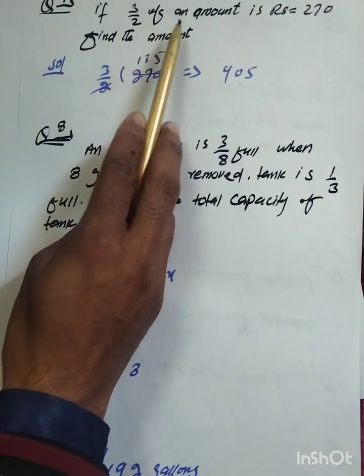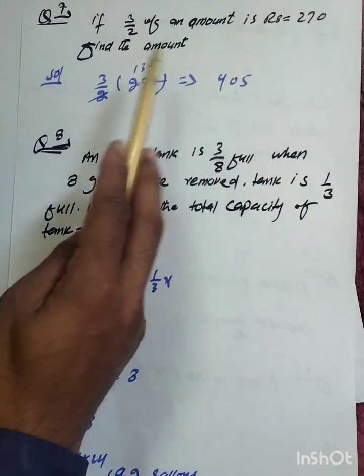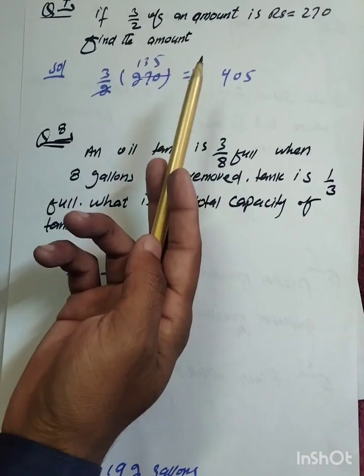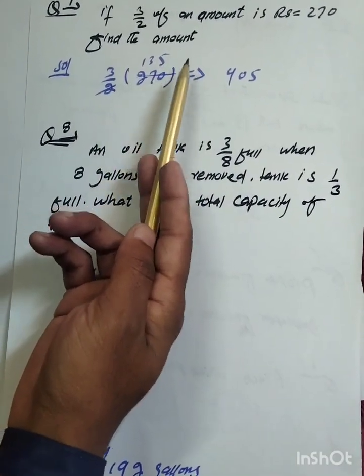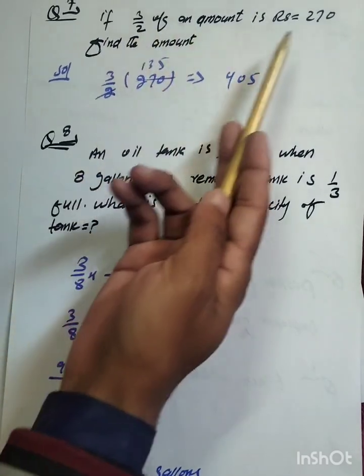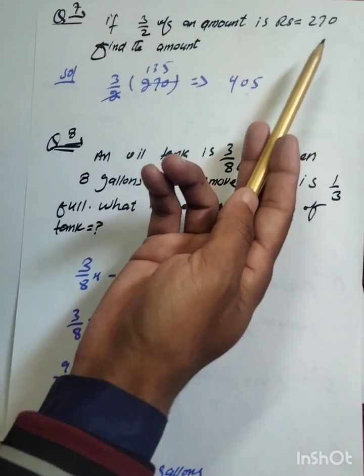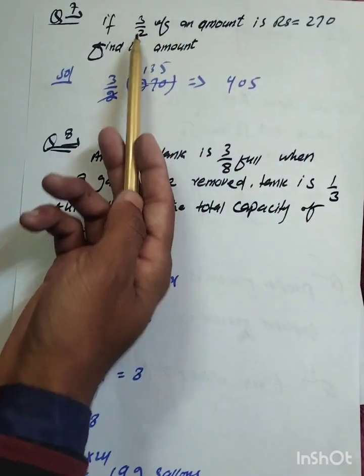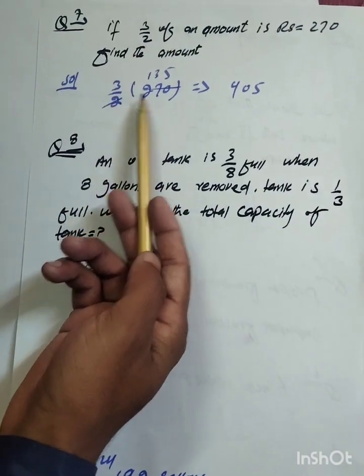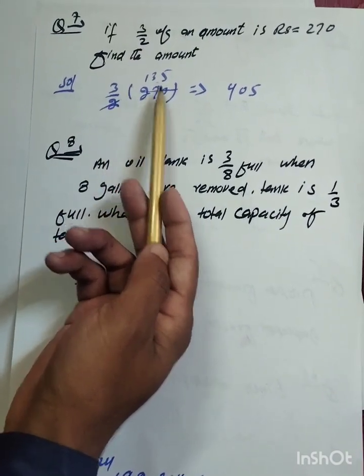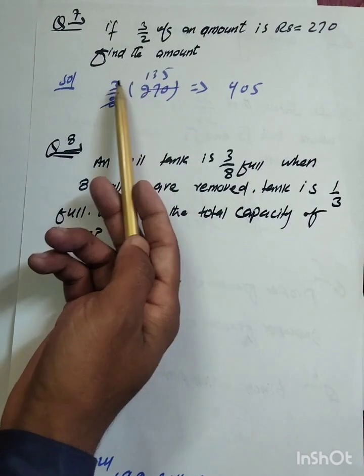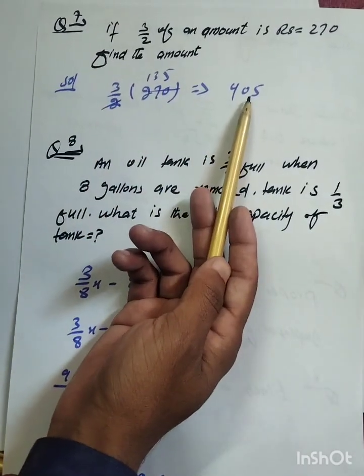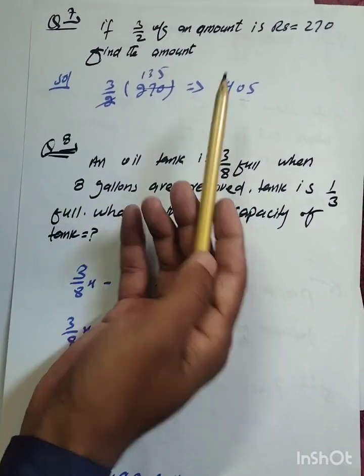Question number 7: If 3 divided by 2 of an amount is 270, find the amount. Multiply by the reciprocal 2 divided by 3, and the total amount is 405.